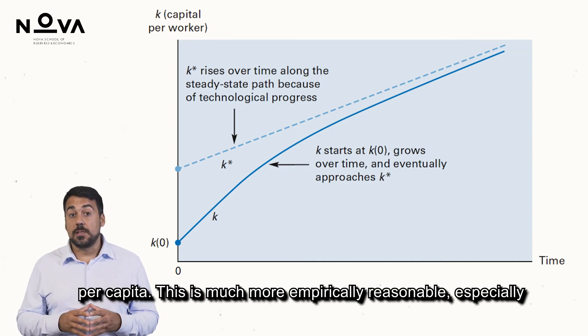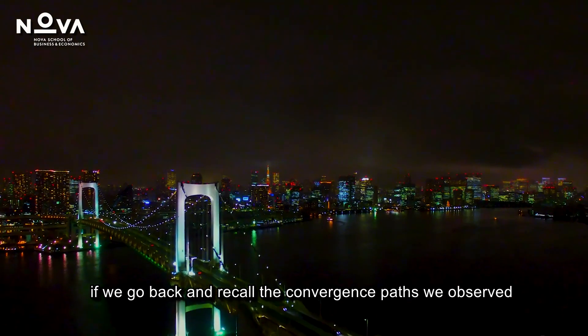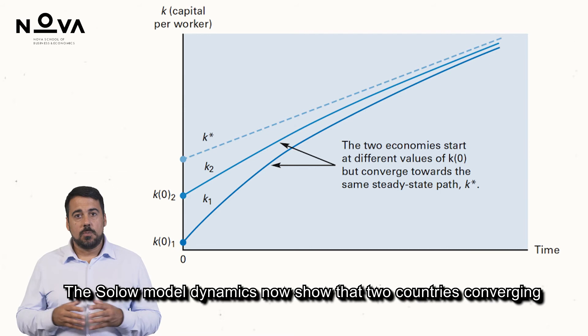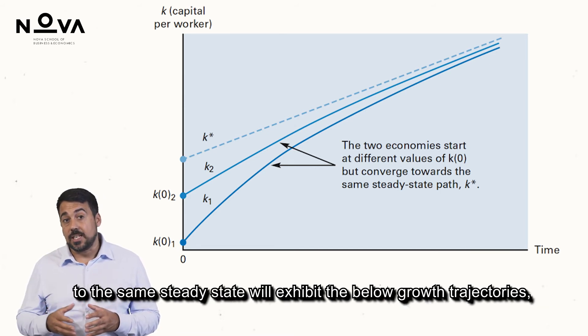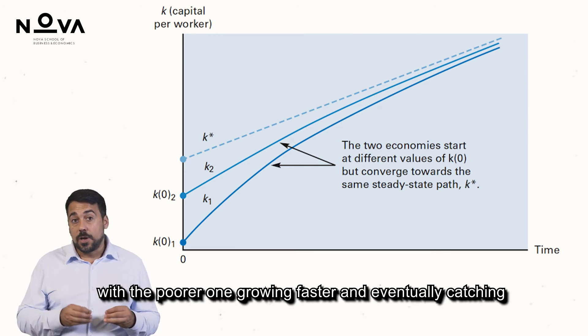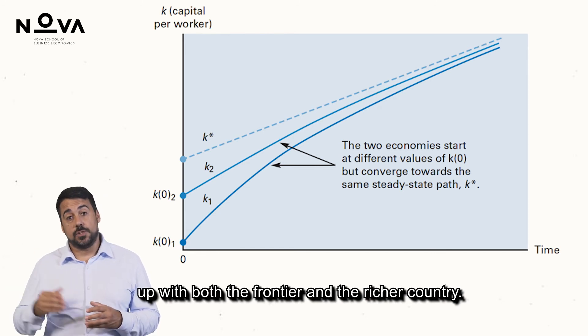Especially if we go back and recall the convergence spots we observed for countries like Korea and Japan. The Solow model dynamics now show that two countries converging to the same steady state will exhibit the below growth trajectories, with a poorer one growing faster and eventually catching up with both the frontier and the richer country.